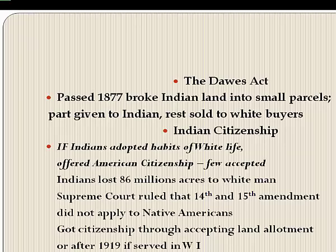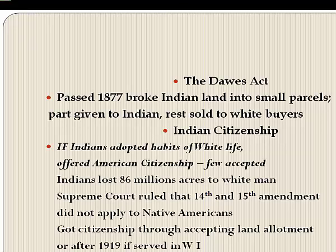While many 19th-century laws offered Indians the right to become citizens, very few accepted, as most wanted to retain their tribal identity. Western courts and later the Supreme Court ruled that the 14th and 15th Amendment citizenship and voting rights did not apply to Native Americans. By 1900, about 53,000 Indians had accepted land allotments and become citizens. It would be 1924 when Congress finally acknowledged that all Native Americans were American citizens.